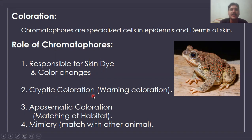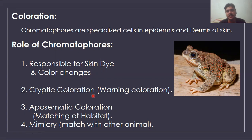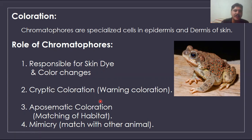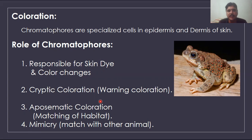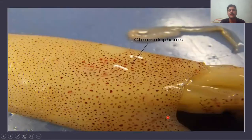Cryptic coloration is a warning for other organisms. Aposematic coloration is where an organism matches with its habitat; when it matches the habitat it can protect itself from predator attack — the predator is confused and it becomes difficult to spot the animal. Mimicry coloration is where the organism matches with some other animal.